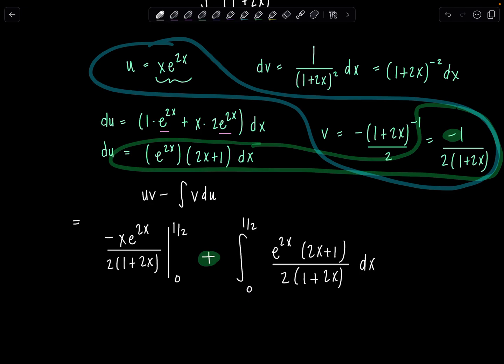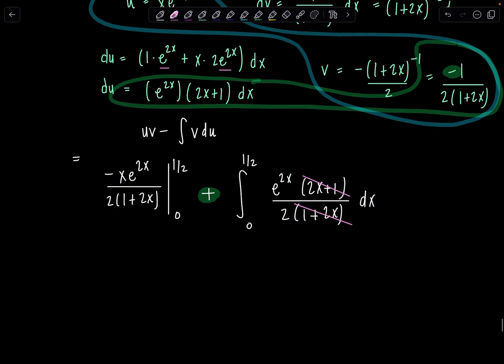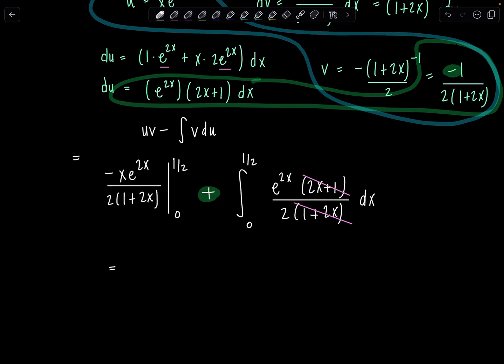Everything looking good? Do you notice something now about this integral? 2x plus 1 cancels. It's the same as 1 plus 2x. That's fabulous for us. So let's just rewrite what we have here. And we're in the home stretch. So this was like a very happy coincidence that really saved us in this problem. So negative xe^(2x) over 2 times (1 plus 2x). I'm not going to evaluate it just yet. I like to wait until everything's done. And then now let me rewrite the integral a little more neatly. Let me take that 2 in the denominator out. So it's a 1/2. And then you have 0 to 1/2 e^(2x) dx.